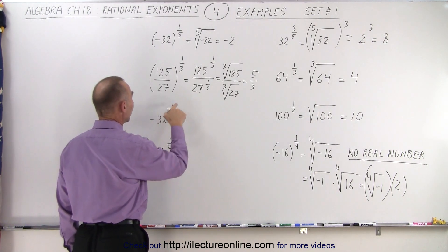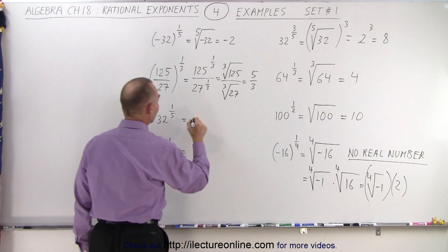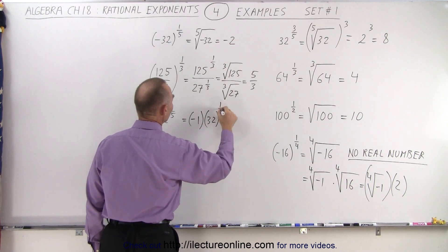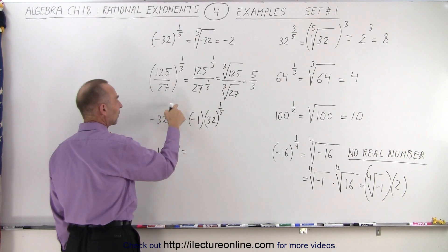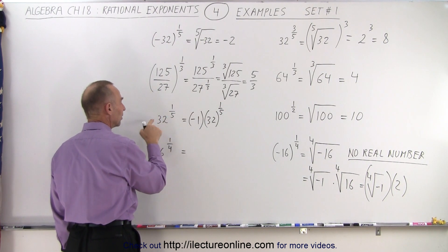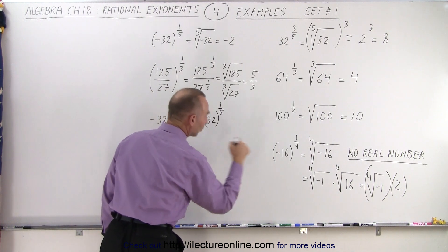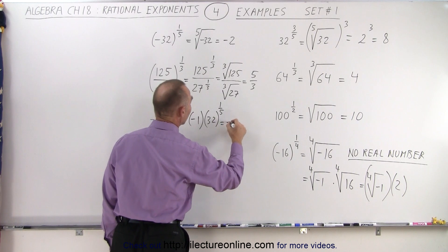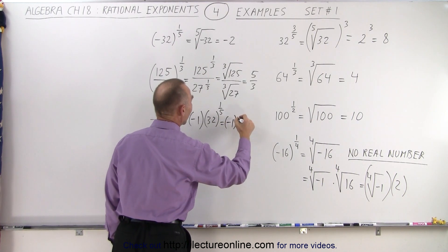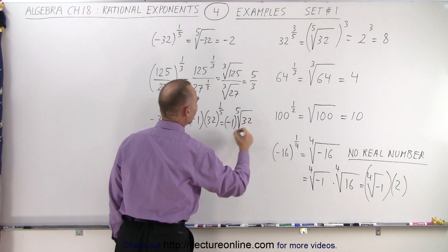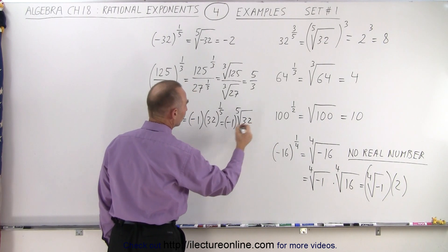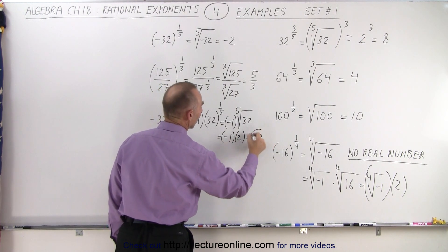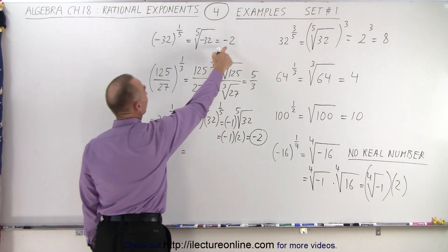Here, negative 32 to the 1/5th power, that means that this is a negative 1, times 32 raised to the 1/5th power. So I can write it like this, which means that the 1/5th exponent does not apply to the negative, because there were no parentheses there, like we saw over here, or we saw over there. But it doesn't matter, because this can be written as negative 1 multiplied times the 5th root of 32. And of course, the 5th root of 32 is 2, that's equal to negative 1 multiplied times 2, which is equal to negative 2, as the final solution to this problem, just like it is there.